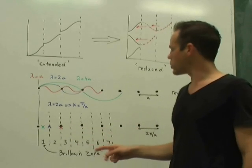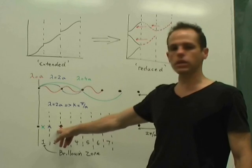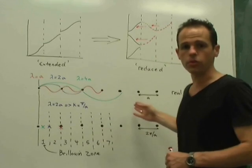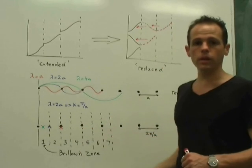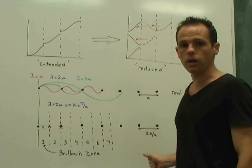And it corresponds to a k vector of 2π over A, and so it sits here on the edge of the second Brillouin zone. And so you can take any wavelength you want and you can plot it as some point in this Brillouin zone scheme in k space just down here.